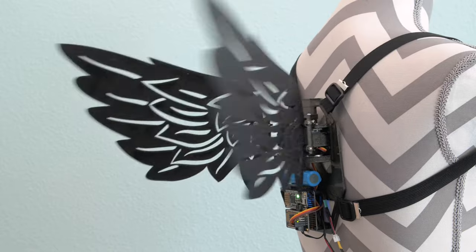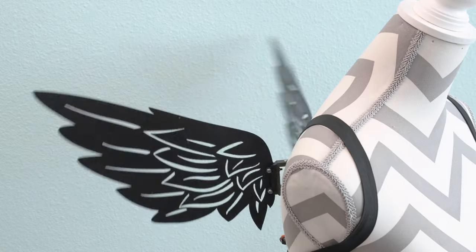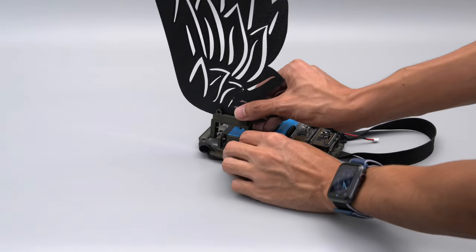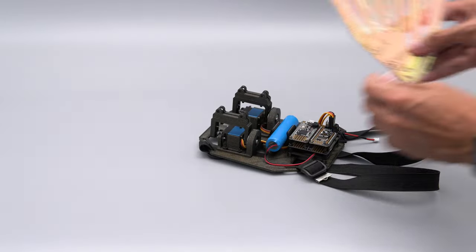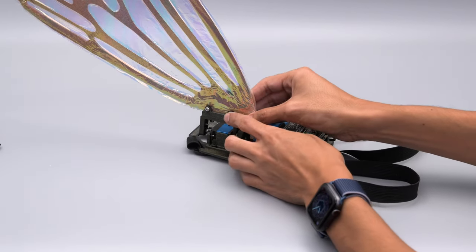Elastic straps allow you to wear them like a backpack so you can easily put them on. You can detach the wings and swap them out so if you want a dragon, an angel, or a fairy you can use this project as a platform for your cosplay.